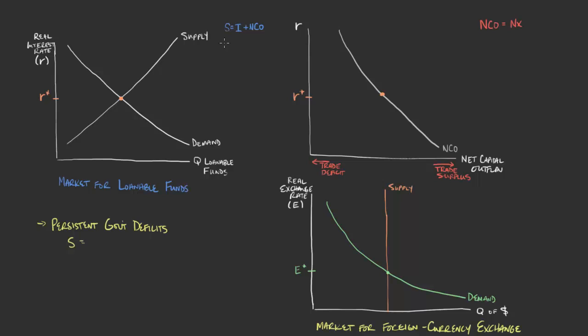We know that savings, if we reorder the savings and GDP formula, is equal to private and public savings. Private savings is Y minus taxes — output minus taxes paid minus consumption. That is what we called private savings in the economy. Then there's also public savings, which is taxes that the government takes in minus all the spending that the government spends. When this is positive, there's public savings; when it's negative, there are public deficits.